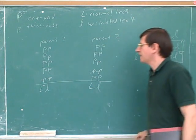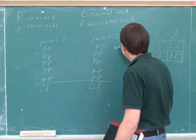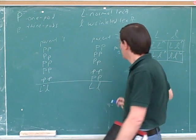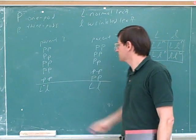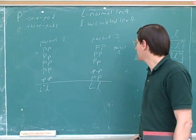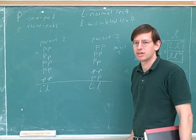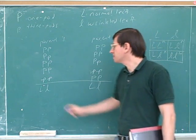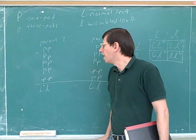Parent one has two alleles — uppercase L and lowercase l — and those are going to have to go into the parent's gametes. So how many of these alleles is each gamete going to get?